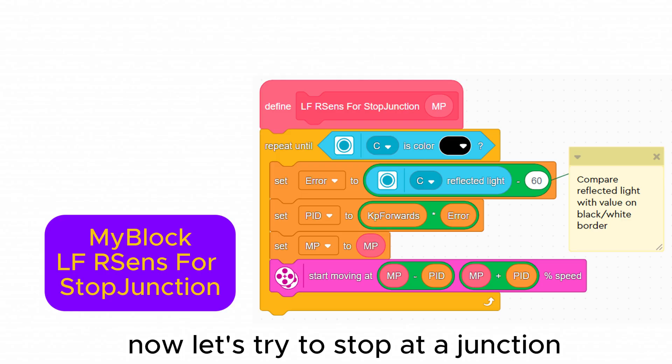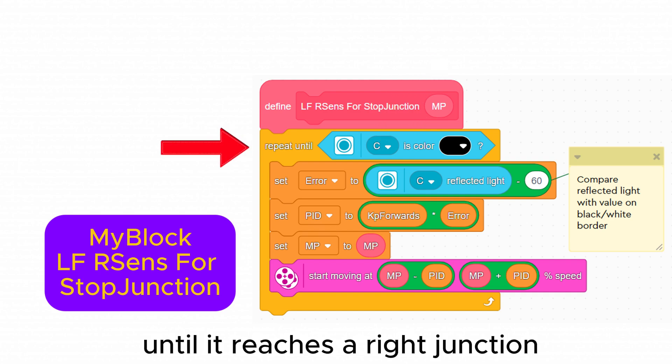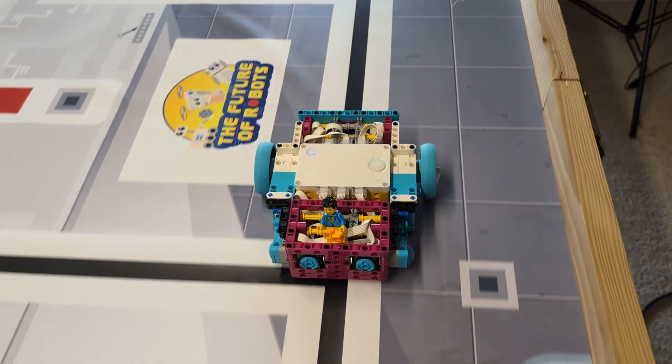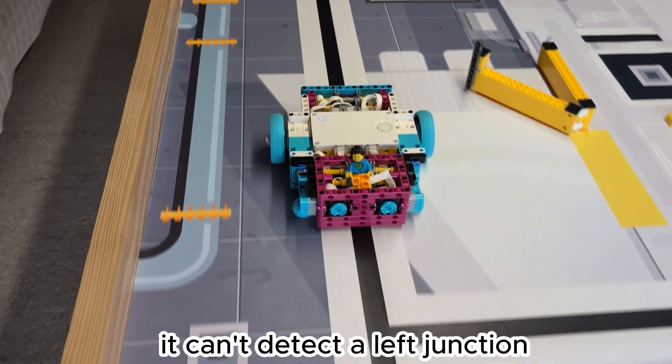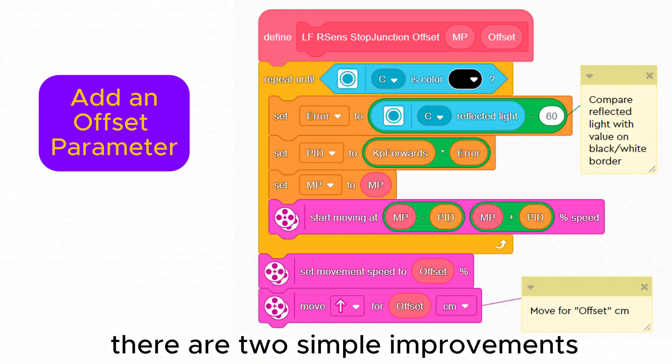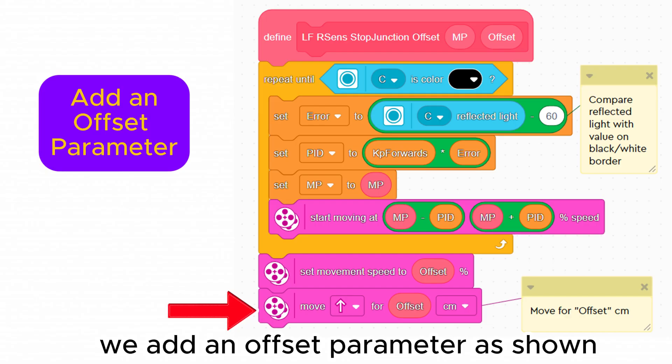Now let's try to stop at a junction. This simple my block uses the right front sensor to follow a line until it reaches a right junction or a crossroads. It can't detect a left junction as it has no left side sensor. There are two simple improvements we can make to this. We can drive a small distance further to position the robot for a turn. To do this we add an offset parameter as shown. With an offset of eight centimeters the robot is positioned nicely for a spin turn.